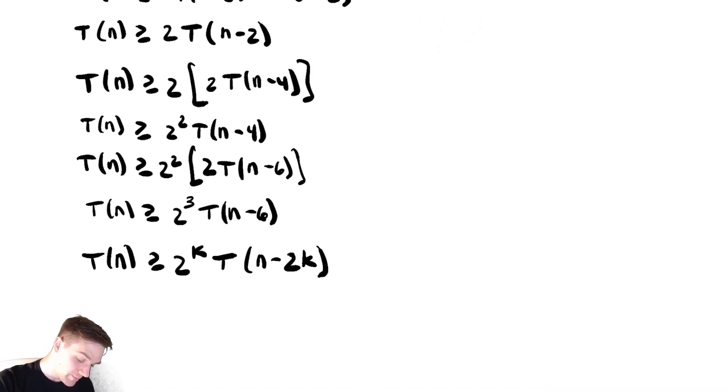For k equals one we have two t of n minus two. For k equals two we have two squared t of n minus four. For k equals three we have two cubed t of n minus six. So it seems to check out.